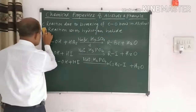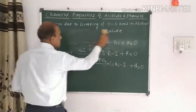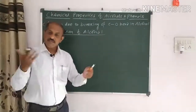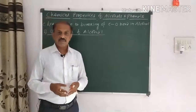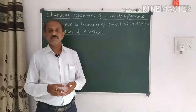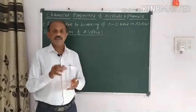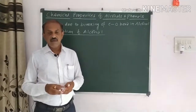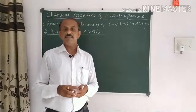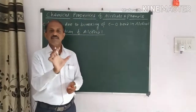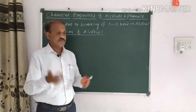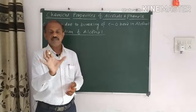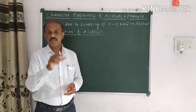Now we continue with the second reaction: oxidation of alcohol. Oxidation is the process in which a primary or secondary alcohol reacts with an oxidizing agent to give a carbonyl compound by dehydrogenation. 'De' means removal, so dehydrogenation means hydrogen is removed — just as dehydration means removal of water, dehydrogenation means removal of hydrogen.